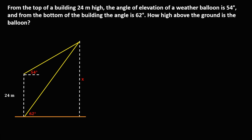To solve this problem, since we have an oblique triangle, we can use the Law of Sines or the Law of Cosines. Since the given is two angles and a side, we will use the Law of Sines. If this is angle A, this side is side A. If this is angle B, this side is side B. And if this is angle C, this side is side C.